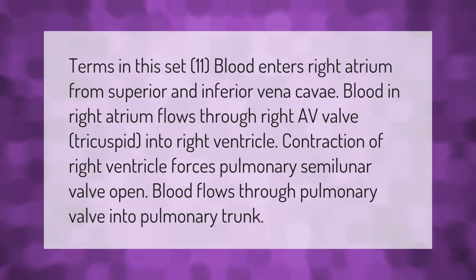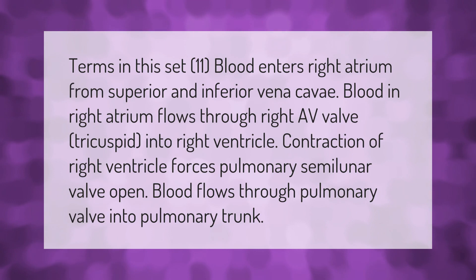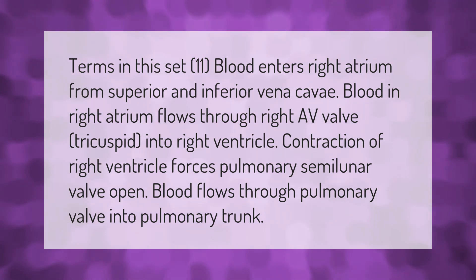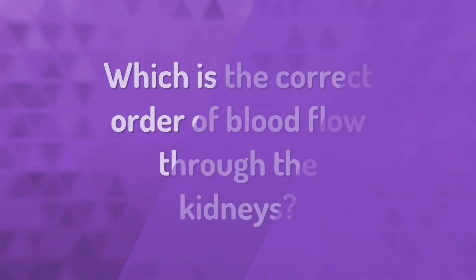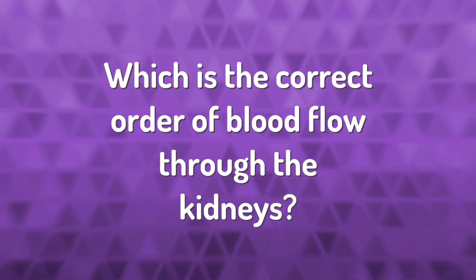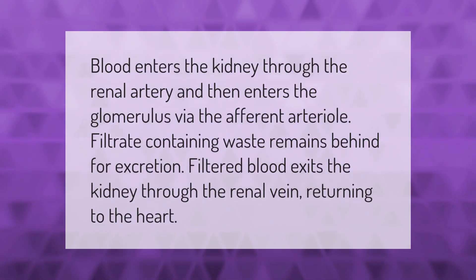Blood enters the right atrium from the superior and inferior vena cavae. Blood in the right atrium flows through the right AV valve, the tricuspid, into the right ventricle. Contraction of the right ventricle forces the pulmonary semilunar valve open, and blood flows through the pulmonary valve into the pulmonary trunk.